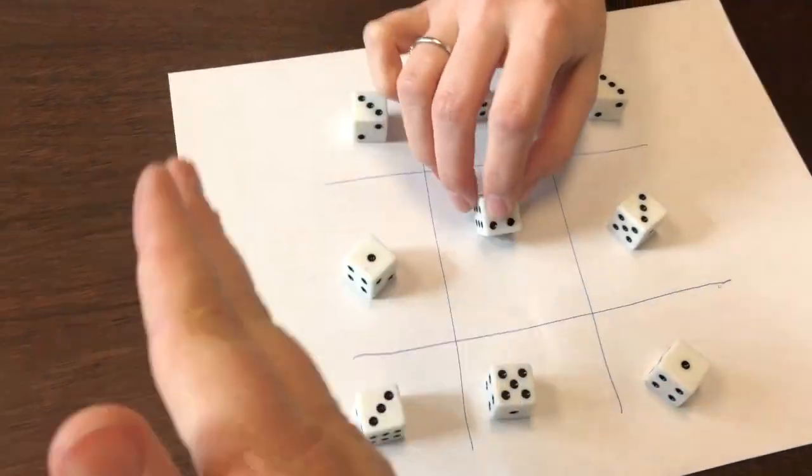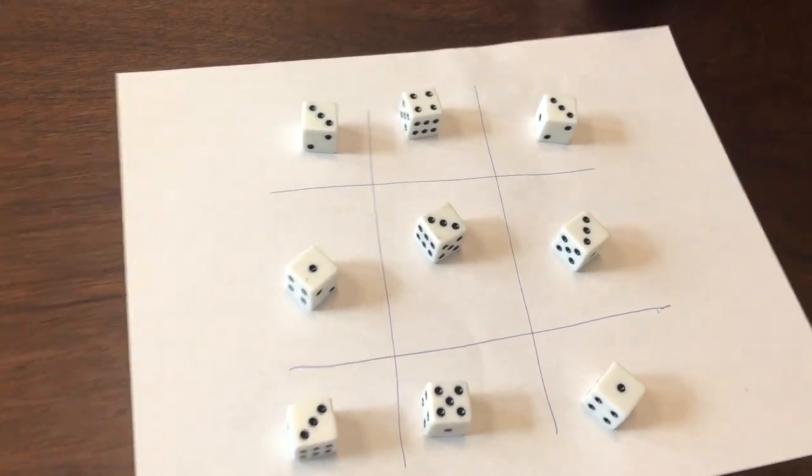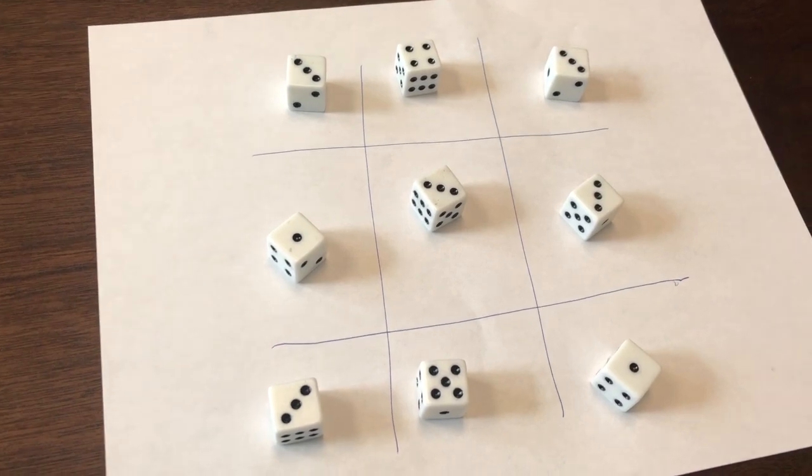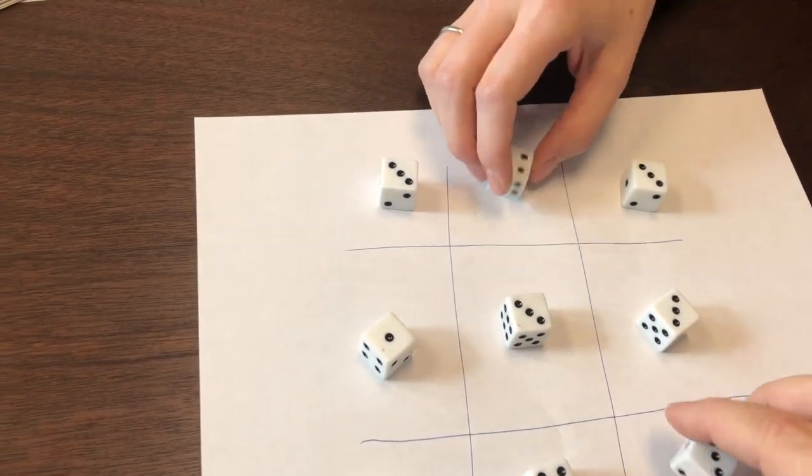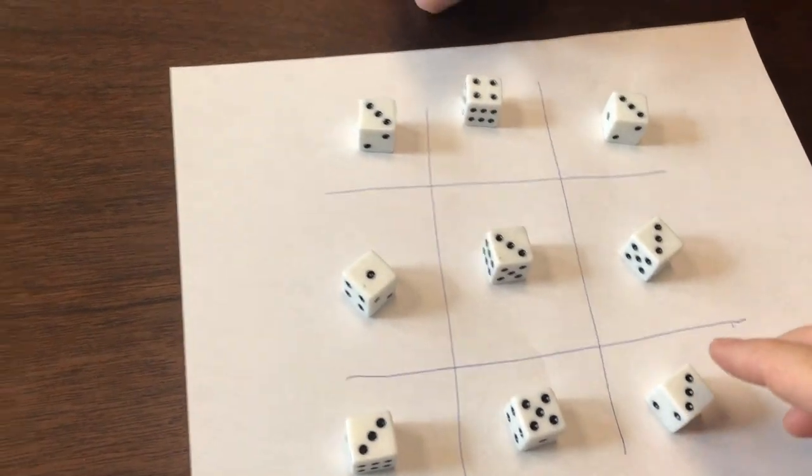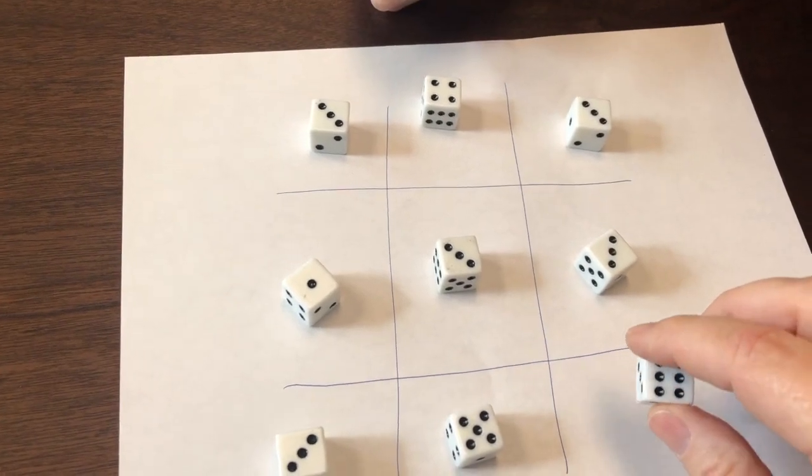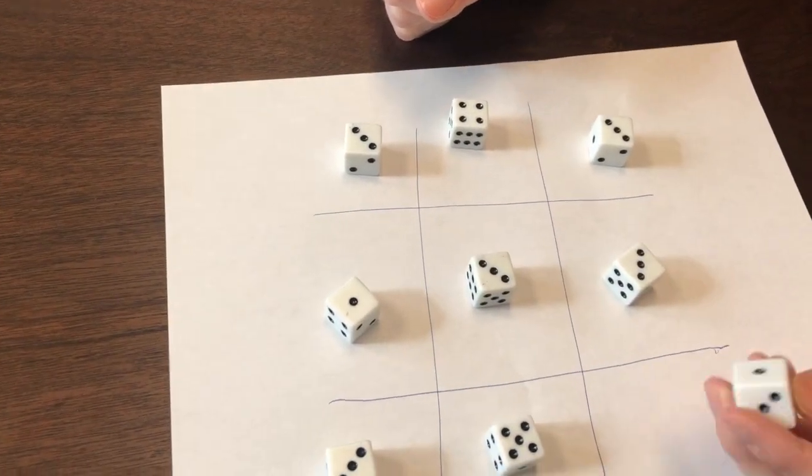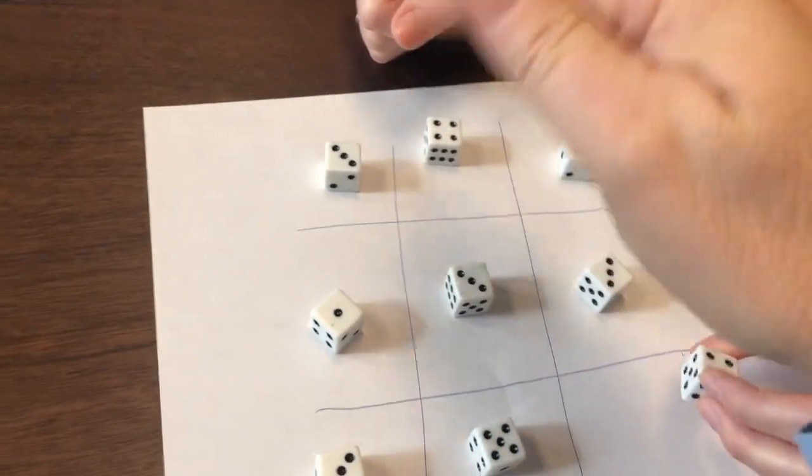Every row, column, and the two main diagonals should be the same sum without being super trivial. Now if you have to do a little bit of cheating and maybe reuse something, that's cool. But let's see if people can make some sort of non-trivial answer where you make all the rows, columns, and diagonals have the same sum.